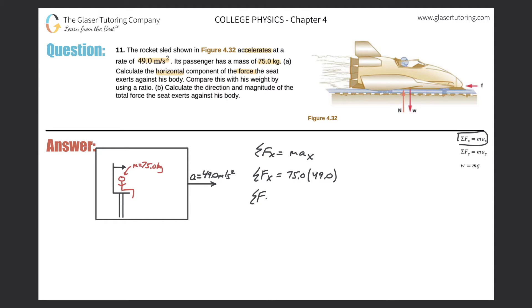So now the sum of the forces in the x direction should simply be 75 times 49. And we'll do three sig figs, so we get a value of 3,680. And that's in Newtons. So this is the force that the seat exerts against his body. That's this vector.